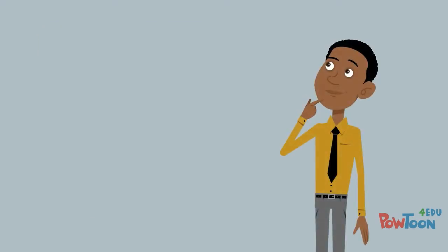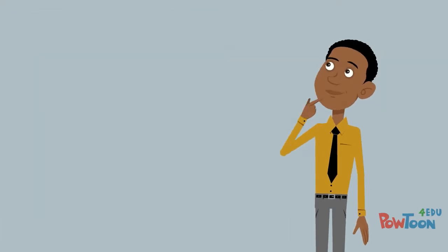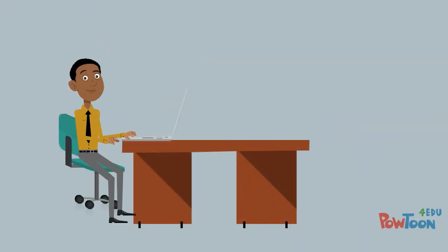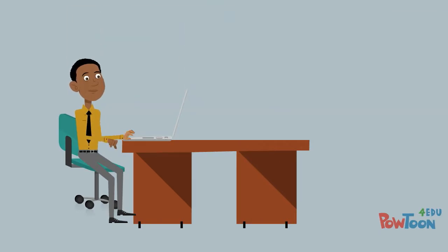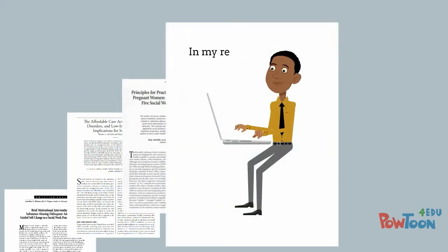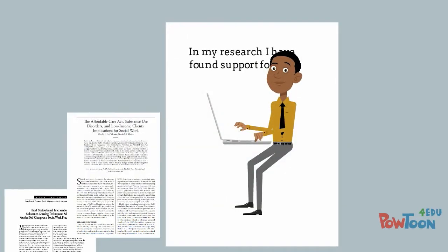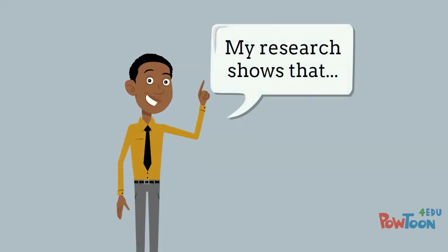And so, when his professors want him to cite previous research in his papers, they want Knox to show that he has reviewed and understands the previous conversation that scholars have had on his topic. They want him to explain how his work is building on this previous work, as well as how it is different from the previous research, and what he is contributing to the conversation on the topic.